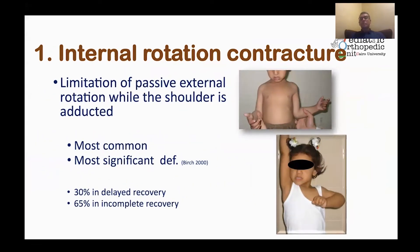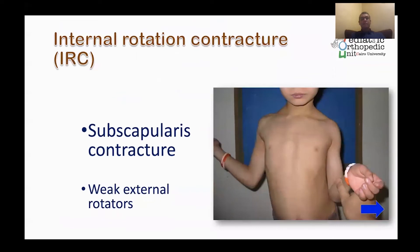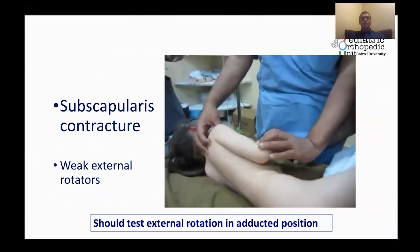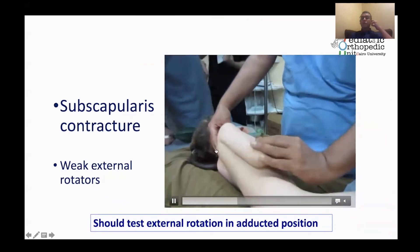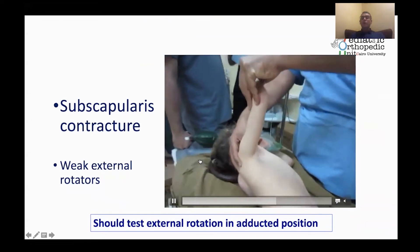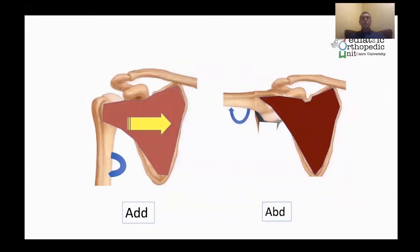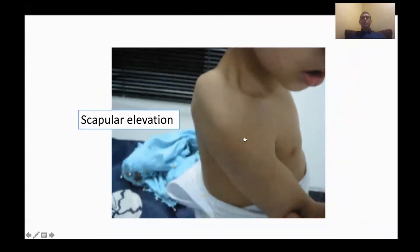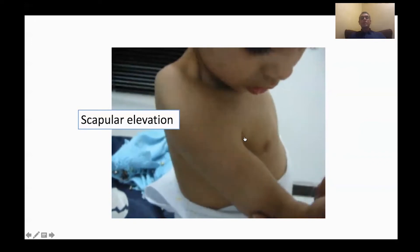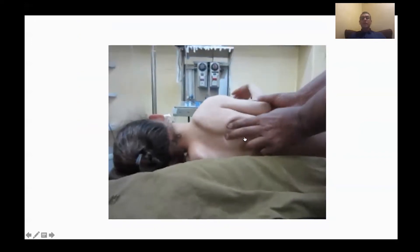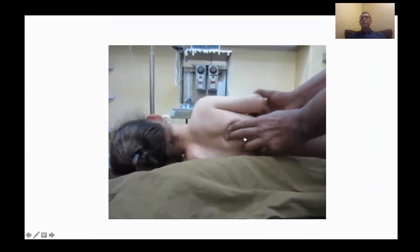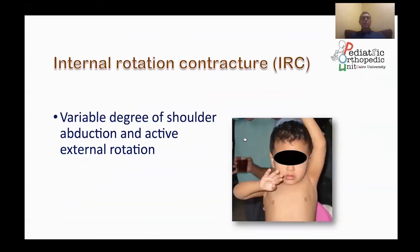The most common is internal rotation contracture — no passive external rotation of the shoulder in adduction, with the main cause being subscapularis contracture. We have to test internal rotation with the shoulder abducted, because the subscapularis restricts external rotation in adduction but not abduction. With passive external rotation attempted, there is a positive scapular elevation sign — the scapula elevates with external rotation, indicating internal rotation contracture.